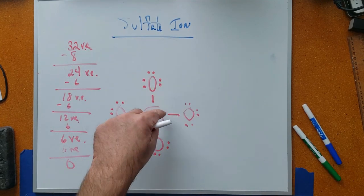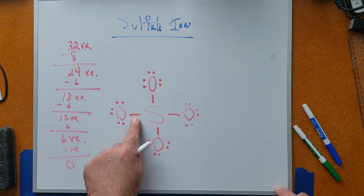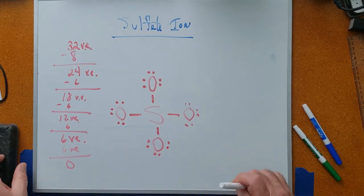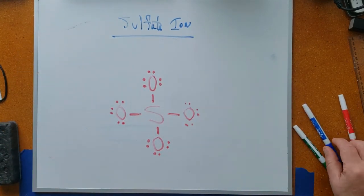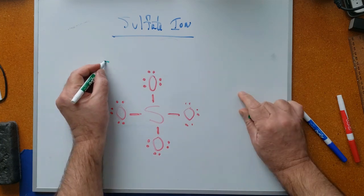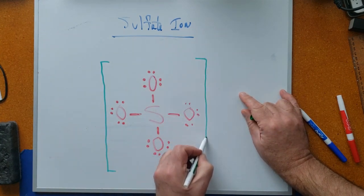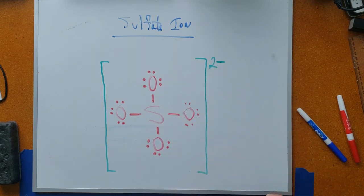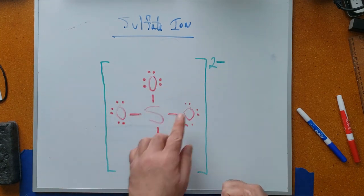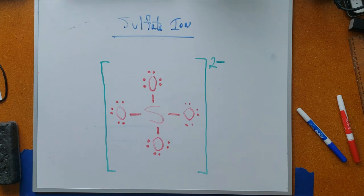The sulfate ion is a central sulfur bonded to four oxygens through single covalent bonds. But to write it in its proper final form, we enclose the entire structure in square brackets and write two minus in the upper right-hand corner, indicating the whole SO₄ structure is a negative two ion. That completes the Lewis dot structure for the sulfate ion.